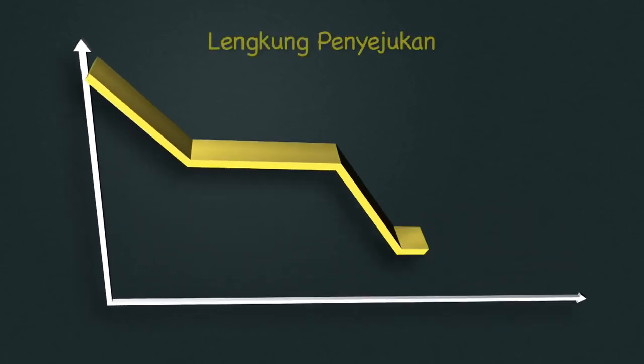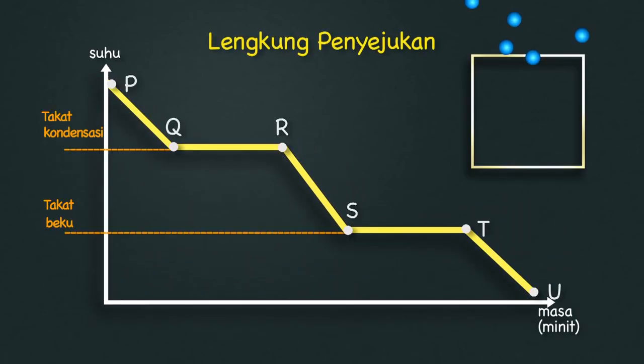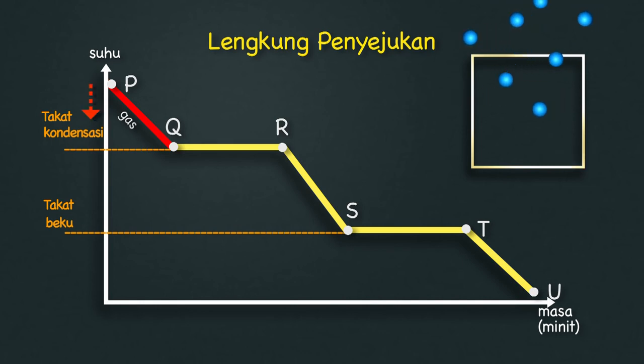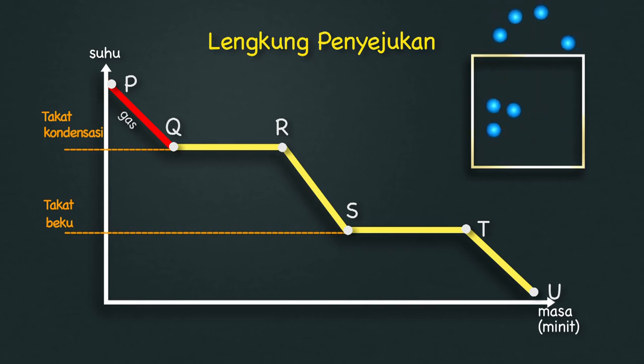Sekarang, kita kaji pula perubahan fasa dan haba pendam yang terdapat dalam lengkung penyejukan. PQ — Haba dibebaskan menyebabkan tenaga kinetik berkurang, maka suhu juga menurun.